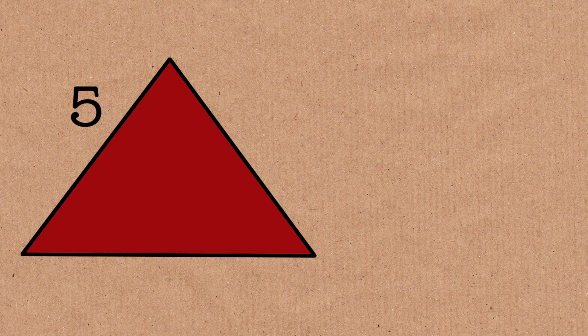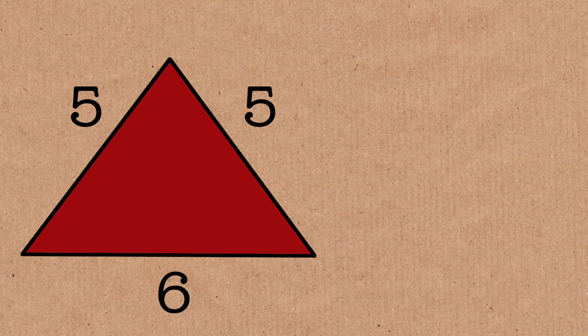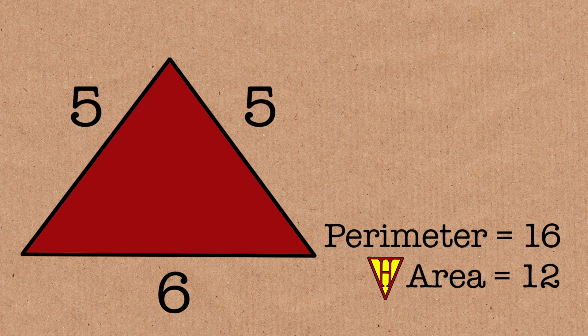I'll show you an example. A five, a five, and a six. Perimeter is 16, and the area is going to be 12. So we've got integer perimeter, integer area. It's a bit of a cheat though.